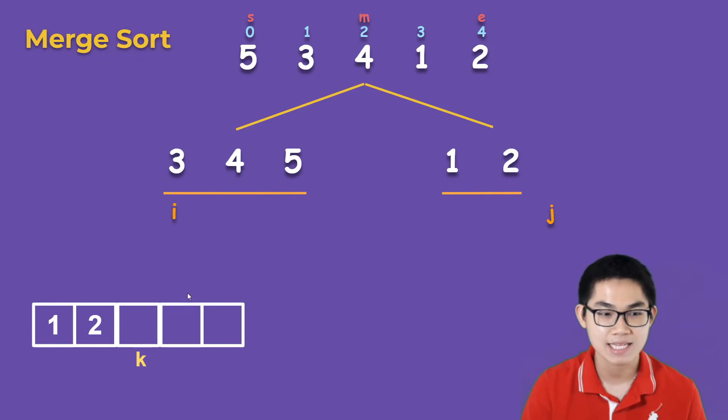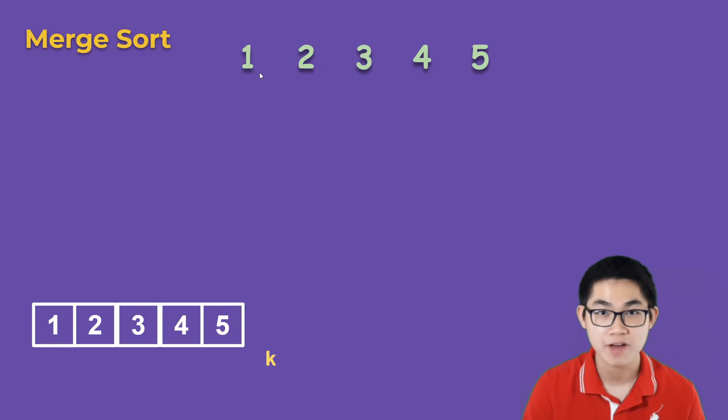We move i up, we move k up. We copy 4 into the array, we move i up, we move k up. And we copy 5, we move i up, and we move k up. Once this array fills up, the last step is simply just copy this back into our original array, and now we have one, two, three, four, five.